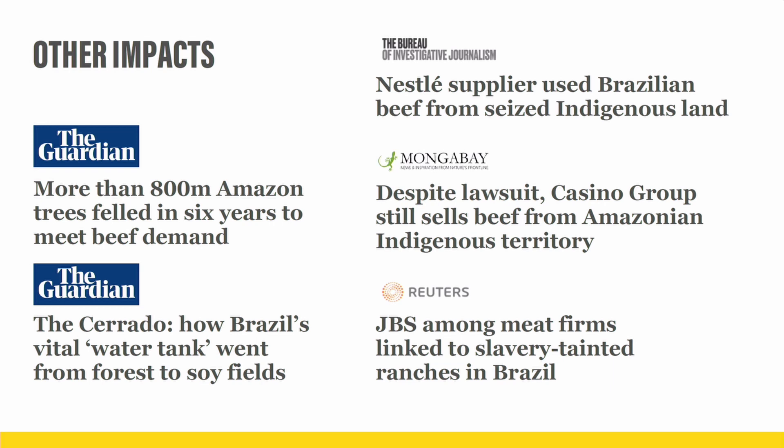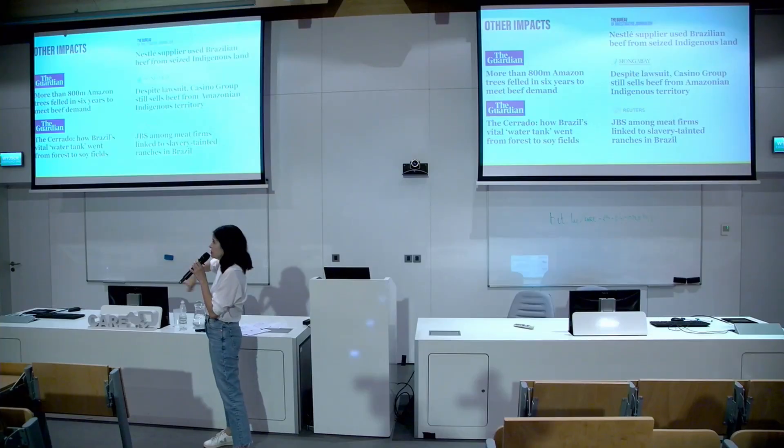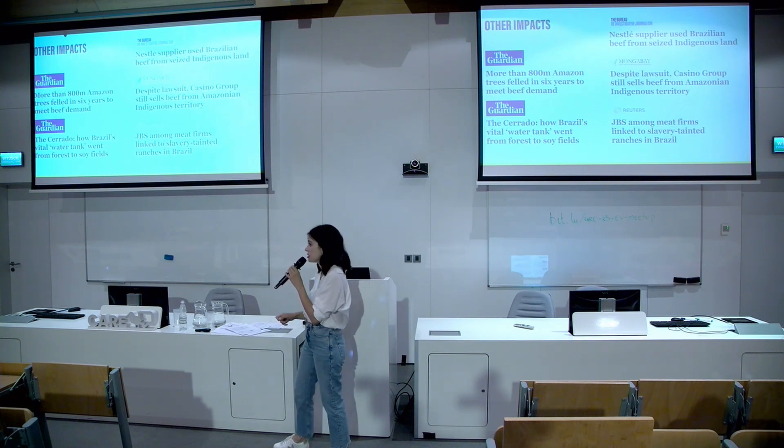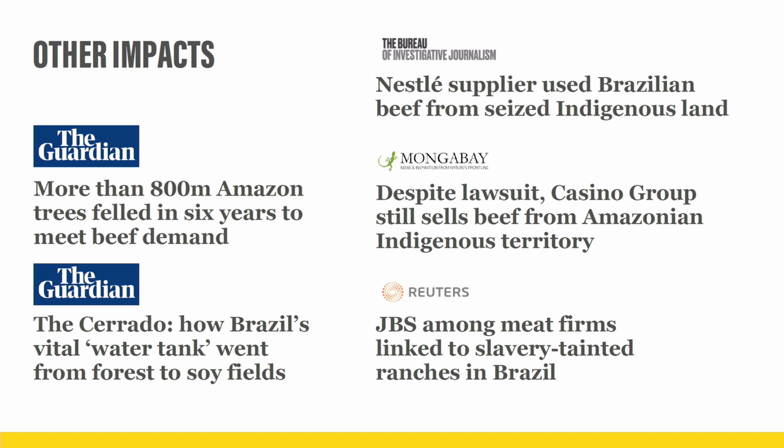Using Brazil as an example: meat production in Brazil is directly related to Amazon deforestation for cattle ranching, and also Cerrado deforestation — the Cerrado is a very important ecosystem in Brazil that is being devastated for soy planting to feed animals. Unfortunately, the Cerrado is not talked about as much as the Amazon, but it is just as important.